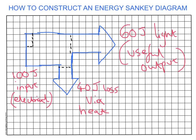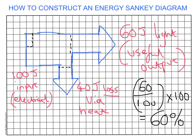So we had 100 joules input, a 40 joule loss of heat, and a 60 joule useful output. If we were to work out the efficiency, energy efficiency is useful output divided by total input times 100. That would be 60 out of 100, times 100 — so this whole process has been 60% efficient. And that is literally how you draw one of these Sankey diagrams: a simple block arrow, proportionally making it smaller and smaller with every loss.